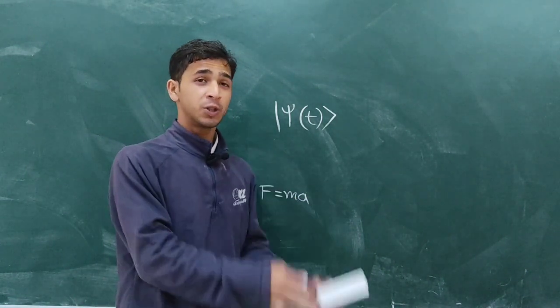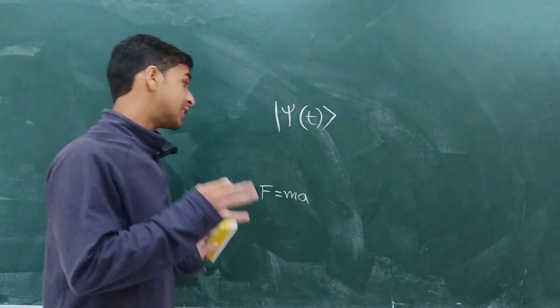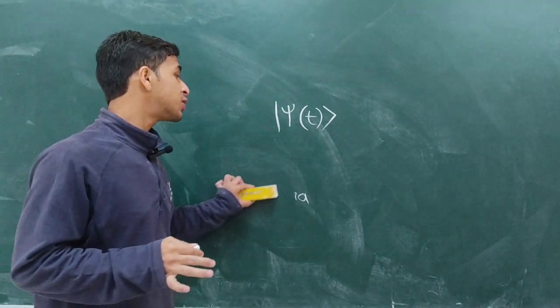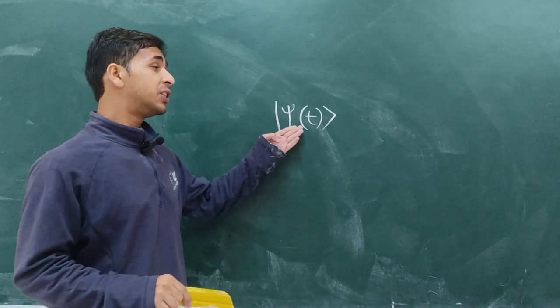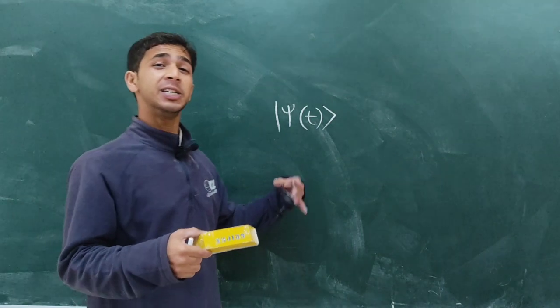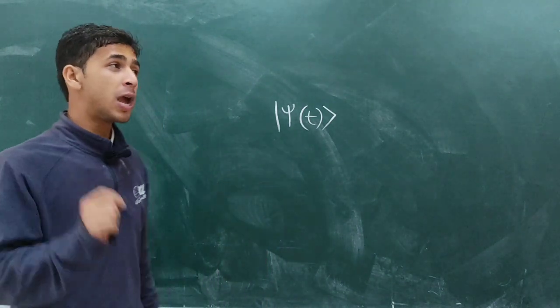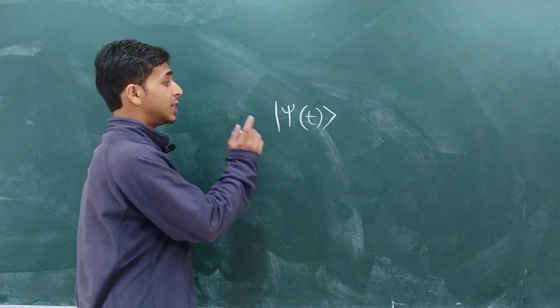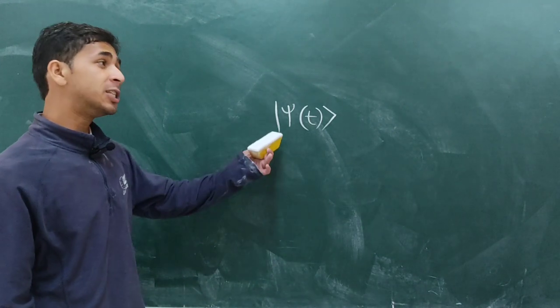In the same way, in quantum mechanics, to know about this state's time development—means what will be the state after some time—we have to operate the Schrödinger equation on this state.